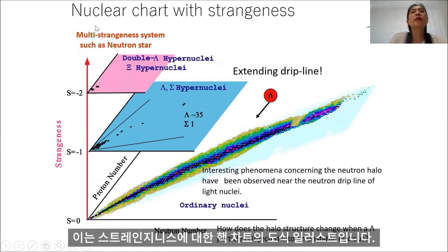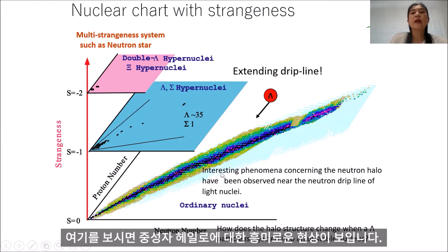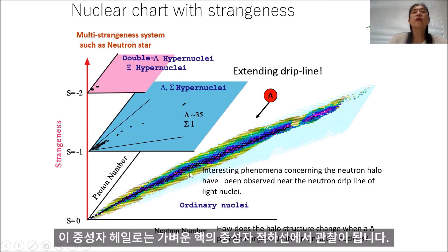This is a schematic illustration of the nuclear chart with strangeness. Here is the non-strangeness sector with neutron number and proton number axes. We have interesting phenomena concerning a neutron halo, which has been observed near the neutron drip line of the light nuclei.